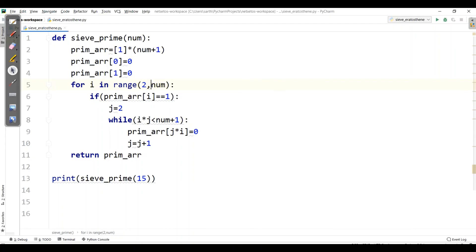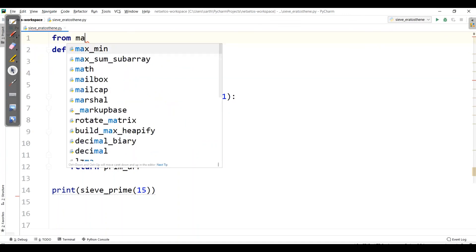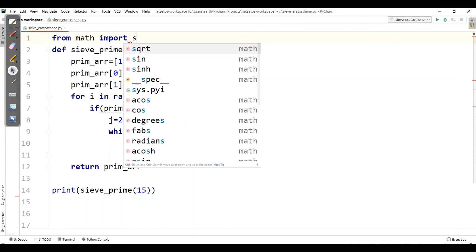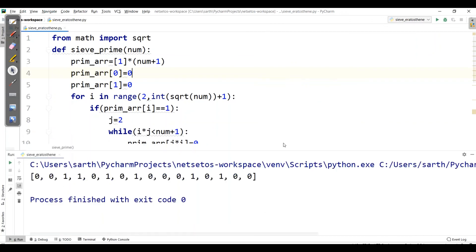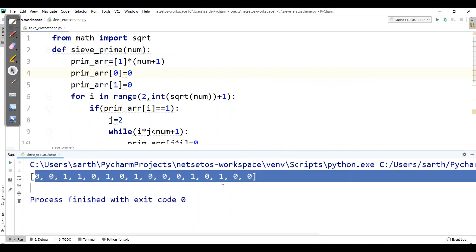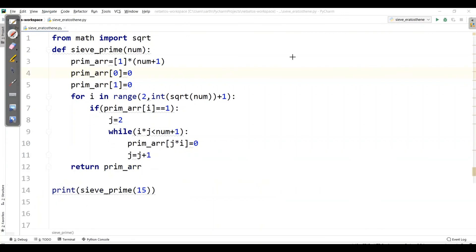Let's make changes in the program. Here I'll write sqrt up to num, and it should be in integer form, plus 1. We need to import sqrt from math. Let's run the program. Here we can see it's the same output as before. If we come to its time complexity, it will be order of n log log n.